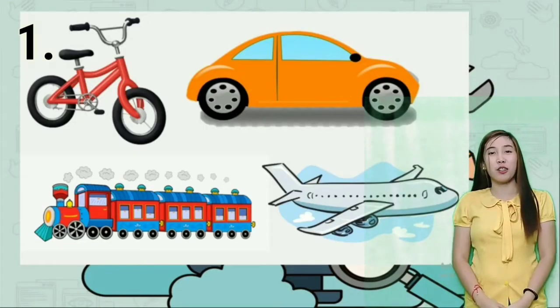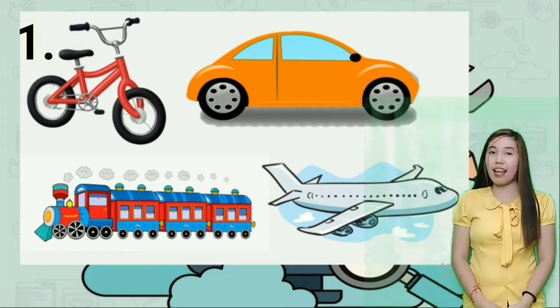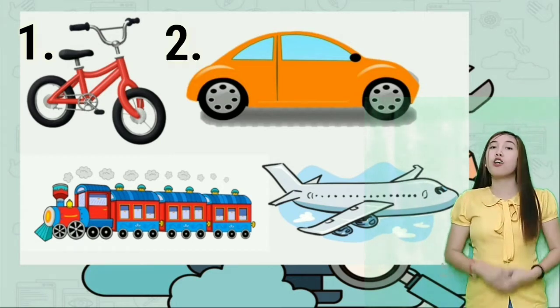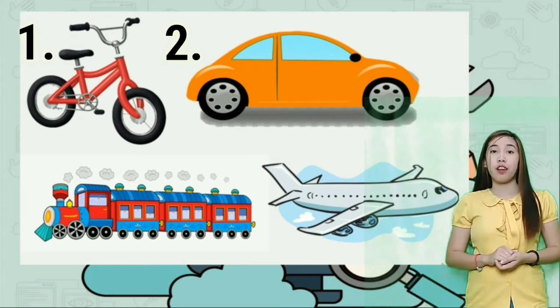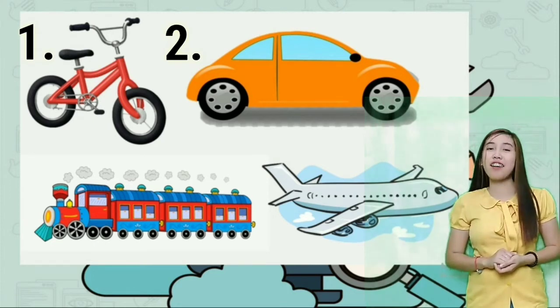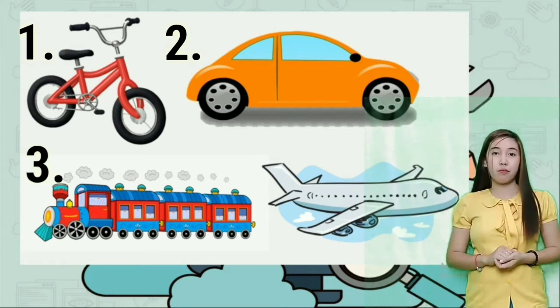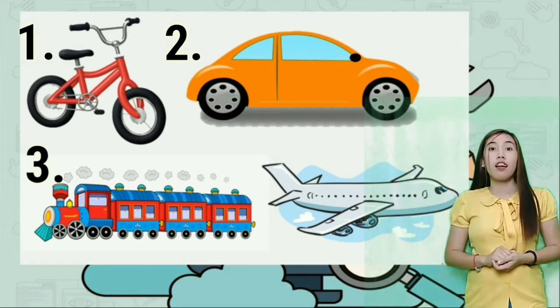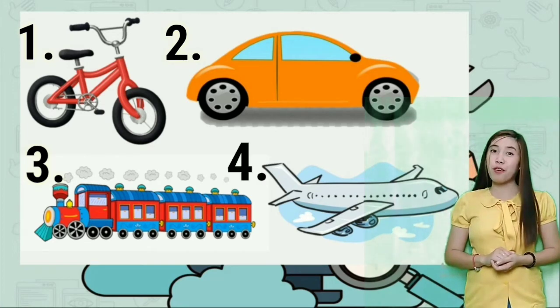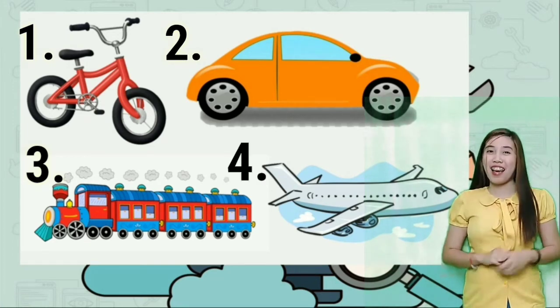Let's start! Number one, we have bicycle. Number two, car. Number three, train. And number four, airplane. That's correct! So these are vehicles according to their speed.